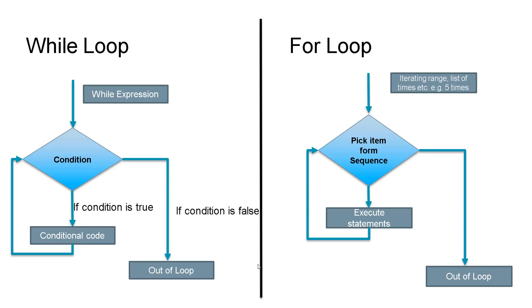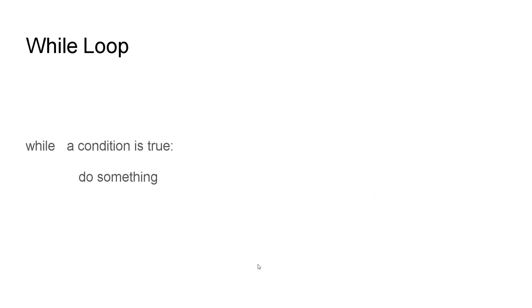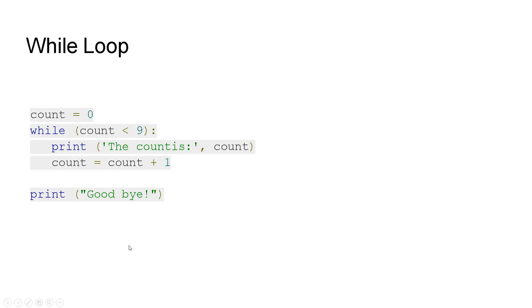Let's look at while loop and for loop side by side. The main difference is the conditional statement. In a for loop, you have a preset range that executes a certain number of times. In a while loop, you have a condition — true or false — and a statement. It checks the condition and does something if it's true.